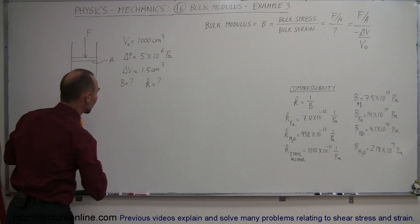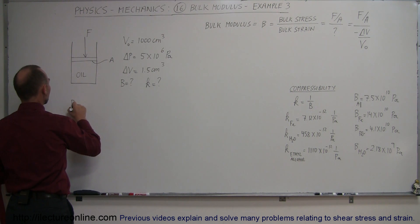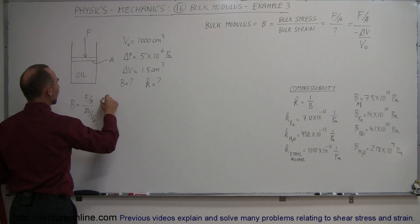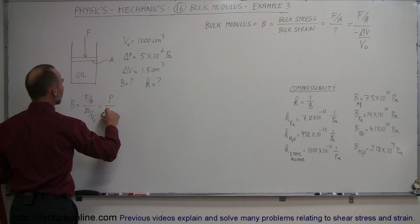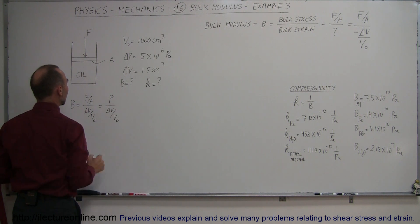All right, so let's go ahead and use our equation that the bulk modulus is equal to the force per unit area divided by the change in the volume divided by the original volume. Of course, force divided by the area is pressure divided by the change in the volume over the original volume.